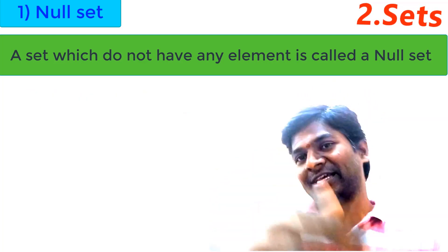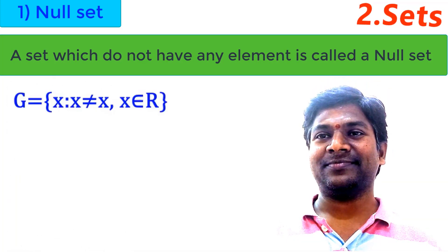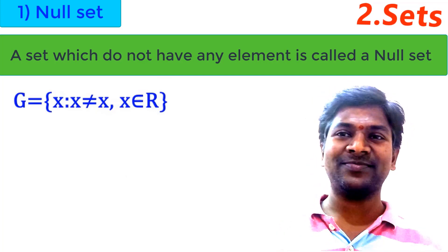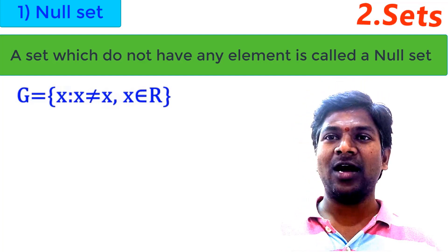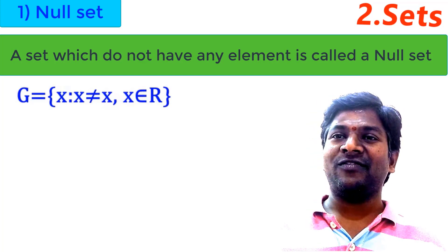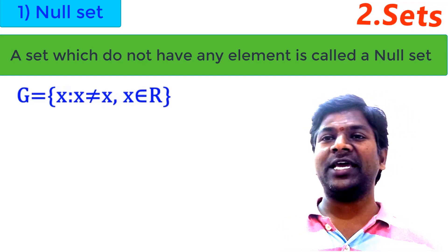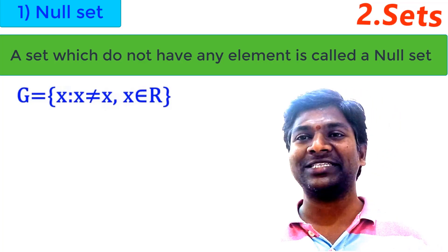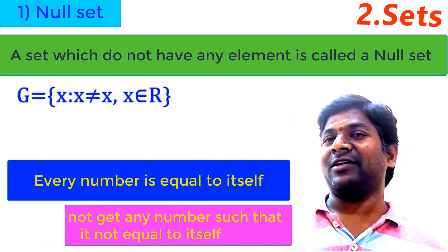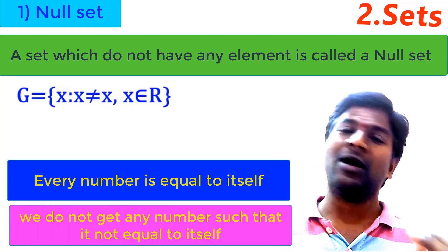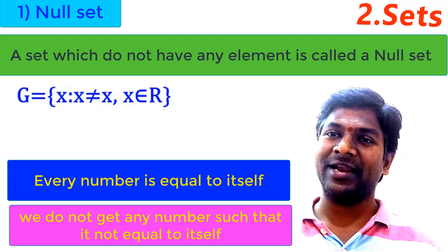Let us take one more example for better understanding: {x such that x ≠ x}. This set is an example for null set. Let us try to write the elements — how is x? x is not equal to x itself. But every element is equal to itself: 1 = 1, 2 = 2. We cannot find any number or element which is not equal to itself, so this is also an example for empty set.